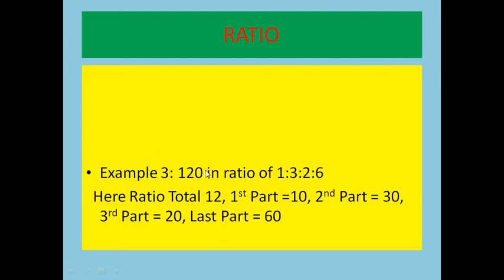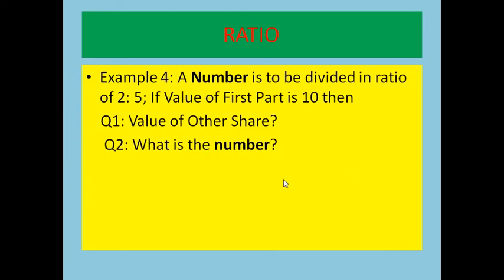If you divide 120 by 12, you get 10 — that is the value of ratio 1. So the first part, ratio 1, is 10; ratio 3 is 30; ratio 2 is 20; and ratio 6 is 60. Please don't use a pen — do this in your mind only.